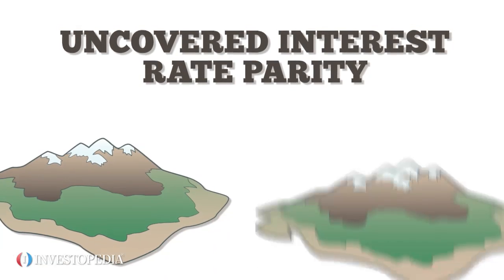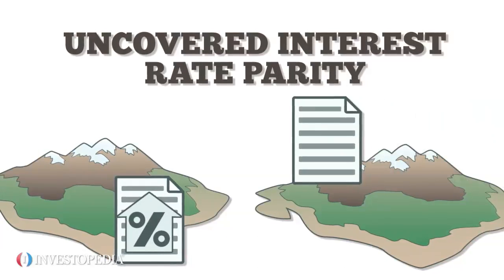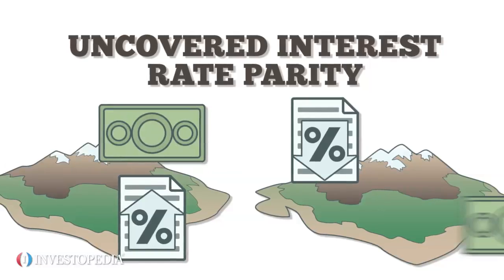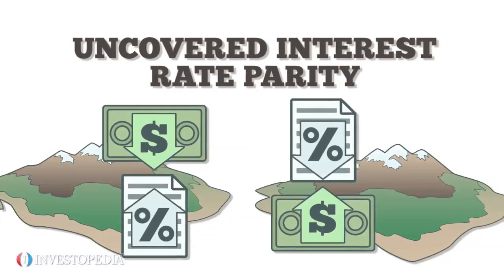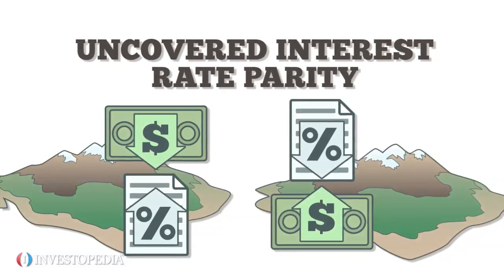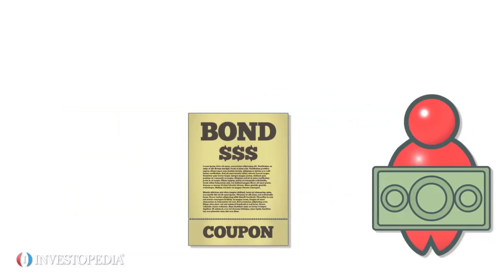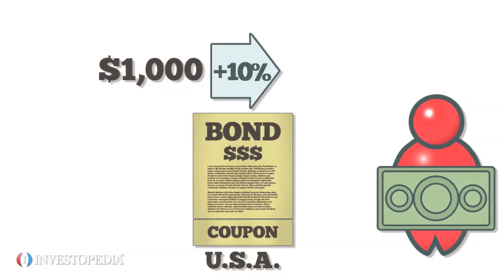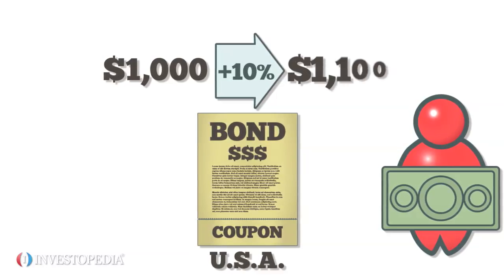Uncovered interest rate parity is the condition in which the difference in interest rates between two nations is equal to the expected change in exchange rates between those nations' currencies. For example, an investor in the United States has two options. She can spend $1,000 buying a U.S. bond with a 10% interest rate. After a year, she'd have $1,100.